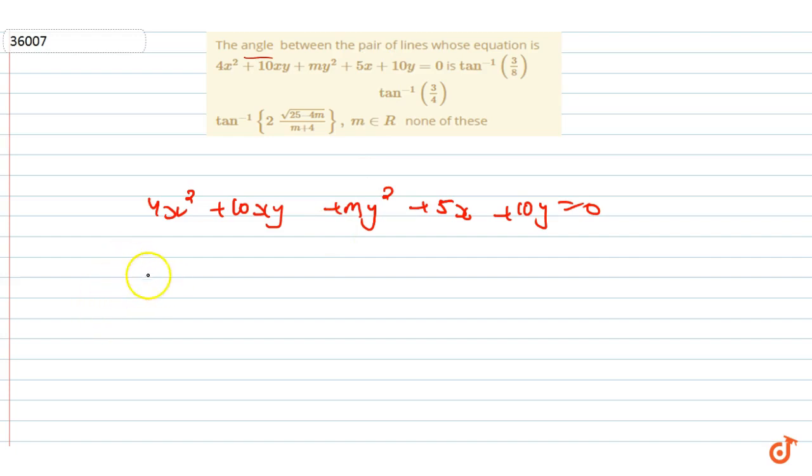The condition is: abc + 2fgh - af² - bg² - ch² = 0. This can be written as a determinant: the determinant of matrix [a, h, g; f, b, f; g, f, c] equals zero.